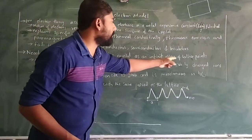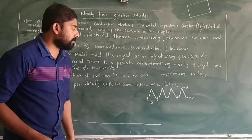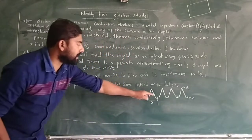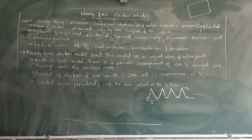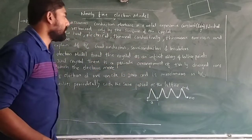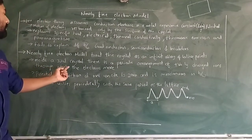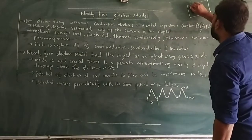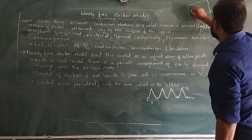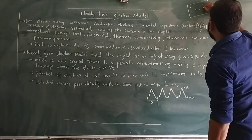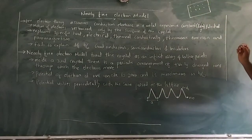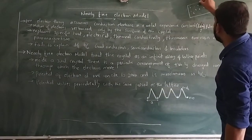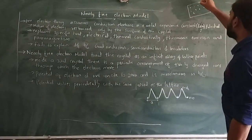The nearly free electron model treats the crystal as an infinite array of points. Inside the real crystal, there is a periodic arrangement of positive ions through which the electrons move. If you consider a metal, there is an infinite array of lattice sites, and an atom or molecule sits at each of these lattice points. When electrons become free in metals, they can move anywhere inside this material.